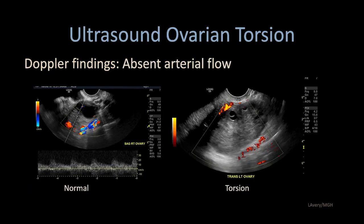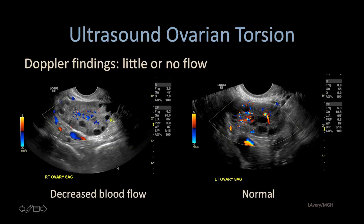Although frequently there may be absent flow — as in this case showing no blood flow compared to the contralateral normal side with its normal low-resistant waveform — there are also instances where there may be just less blood flow. In this ovary we see decreased blood flow with peripheral follicles and heterogeneous central stroma, compared to the normal side where there is avid, multidirectional blood flow.